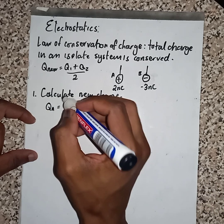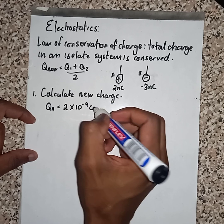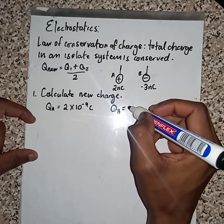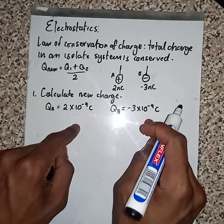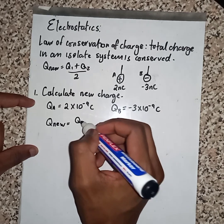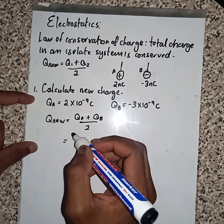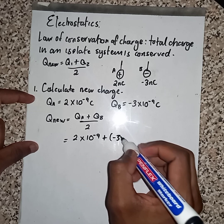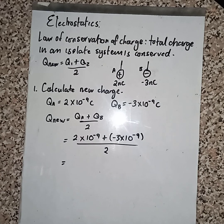We have QA, which is going to be 2 times 10 to the power of minus 9 Coulombs. We also have QB, which is going to be minus 3 times 10 to the power of minus 9 Coulombs. At this point we can use our formula: Q_new equals QA plus QB divided by 2. We substitute: 2 times 10⁻⁹ plus minus 3 times 10⁻⁹, then divide everything by 2.